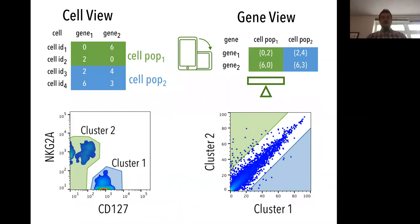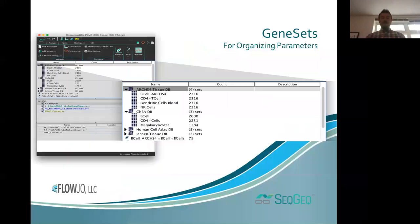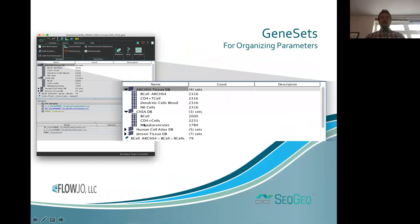This can be a little confusing, especially for first-time users, so feel free to reach out if you have questions about how this works. The gene sets you create by gating in the gene view are available at the top of the workspace. There's a variety of different gene sets which can be imported and exported using SeatGeek.